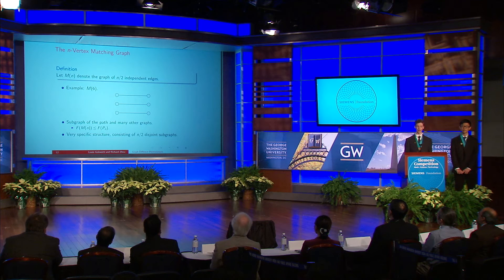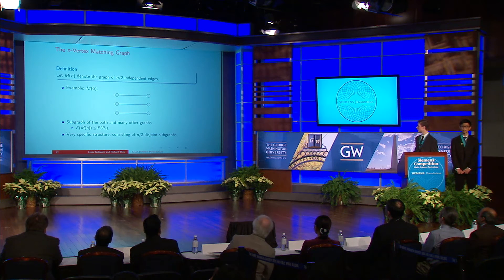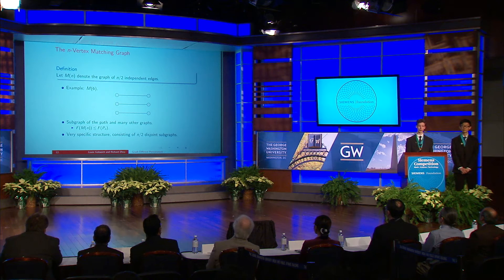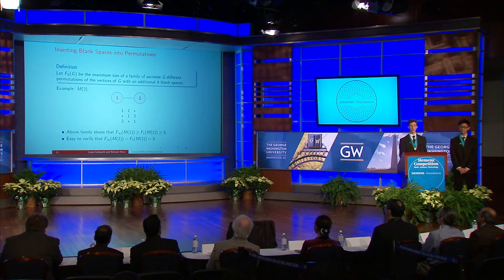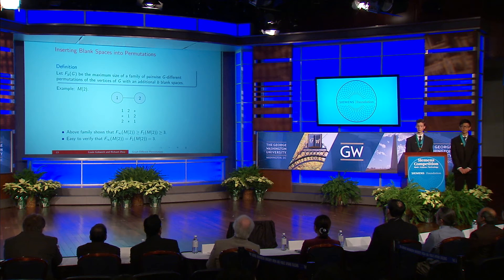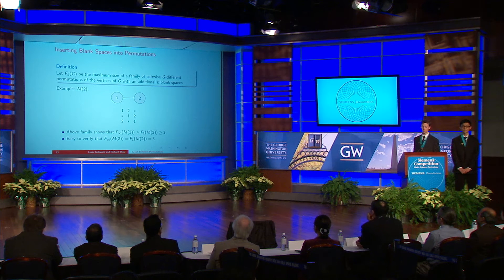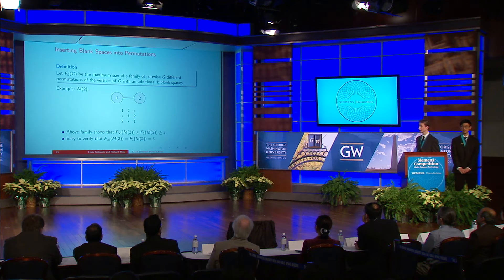We now shift focus to examining the matching graph on n vertices. There are a few reasons why we examine families of pairwise matching-different permutations: the matching graph is a subgraph of the path and of many other graphs, so F of the matching graph is a lower bound on F of the path. Additionally, the matching graph has a very specific structure, consisting of the union of n over 2 disjoint subgraphs. To exploit this structure, we define F sub B of G to be the maximum size of a family of pairwise G-different permutations with an additional B blank spaces — represented by an asterisk — which serve as placeholders within the permutations.